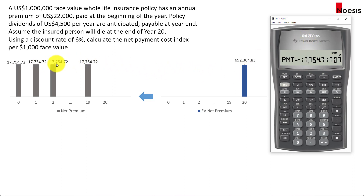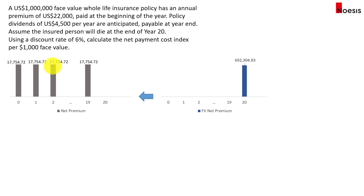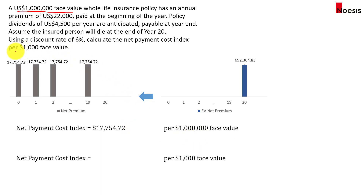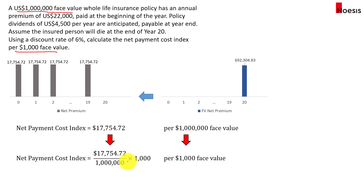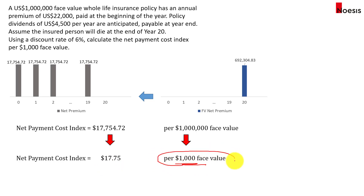This annual net premium is for a face value of $1,000,000. To convert it to a $1,000 face value, take $17,754.72 divided by $1,000,000, then multiply by $1,000. That gives $17.75, which is the net payment cost index per $1,000 face value. In the exam, check what face value is given and what you're converting towards — it could be $100,000, $500,000, or others.